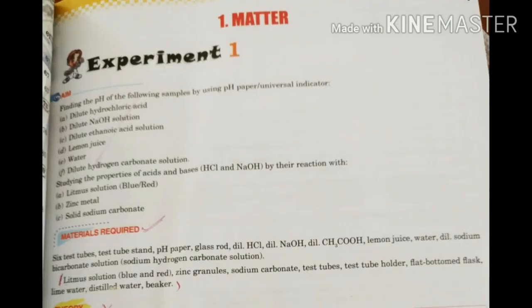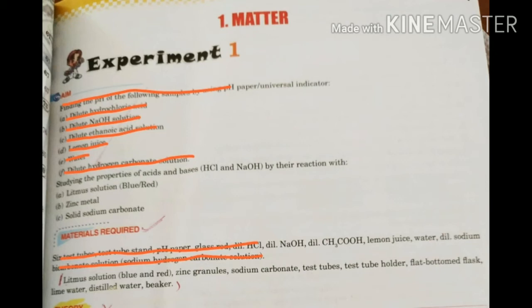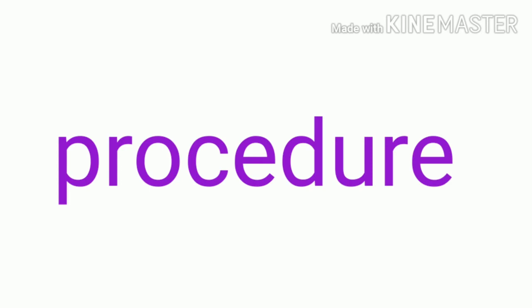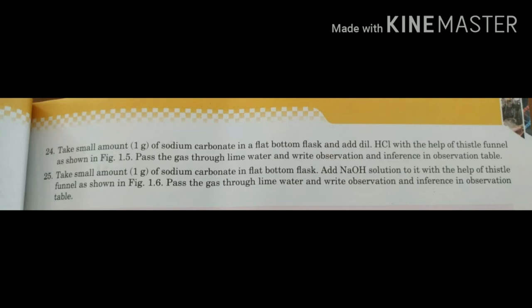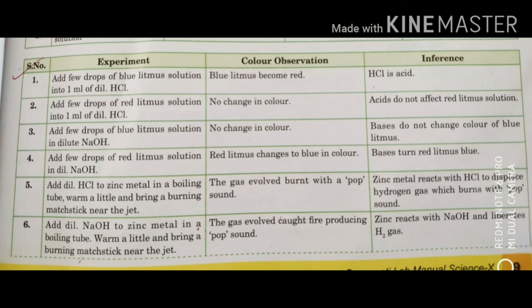Now I'll tell you how to write your record notebook. For experiment one, skip the finding pH section and start from 'studying the properties of acids and bases.' I've struck that out in the picture — no need to write it. For materials required, skip the first two lines and write the next two. For procedure, skip the first page and write from point 18 onwards up to point 25.